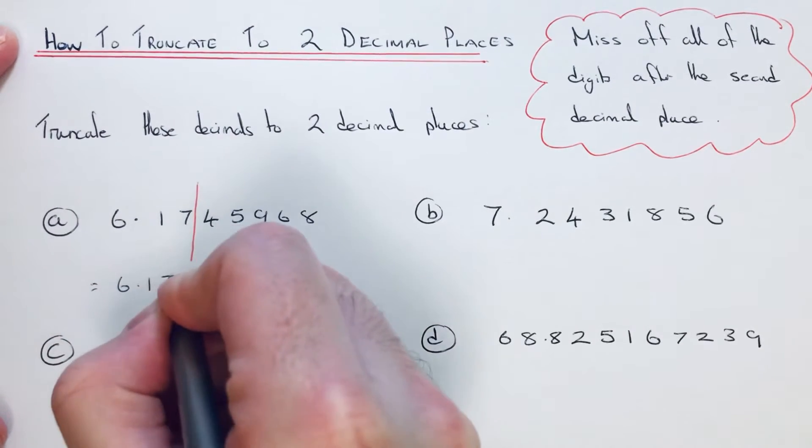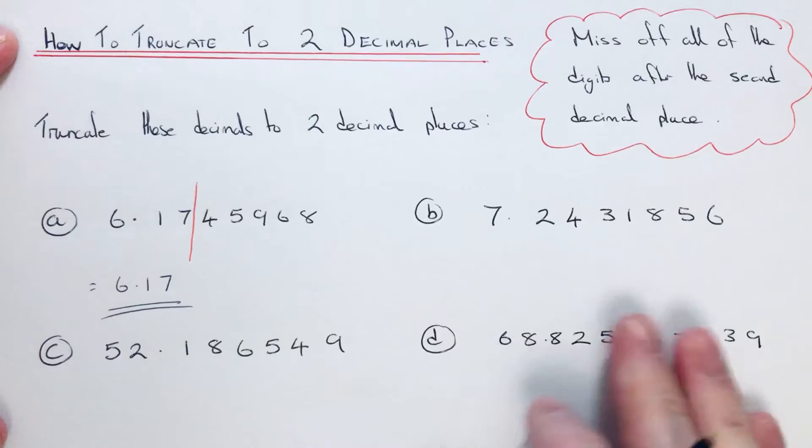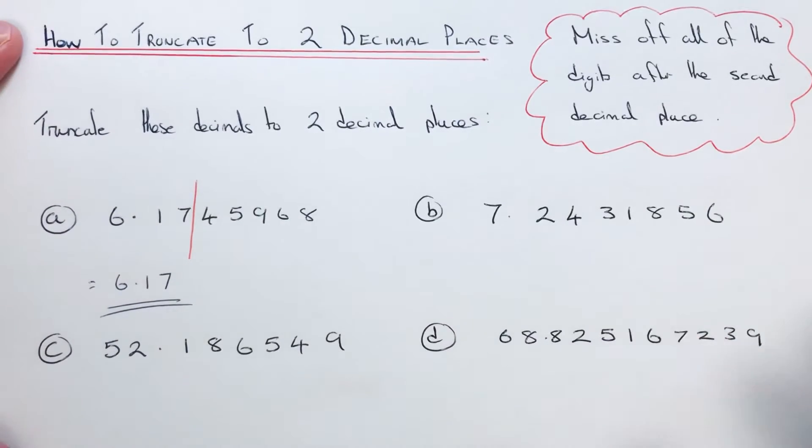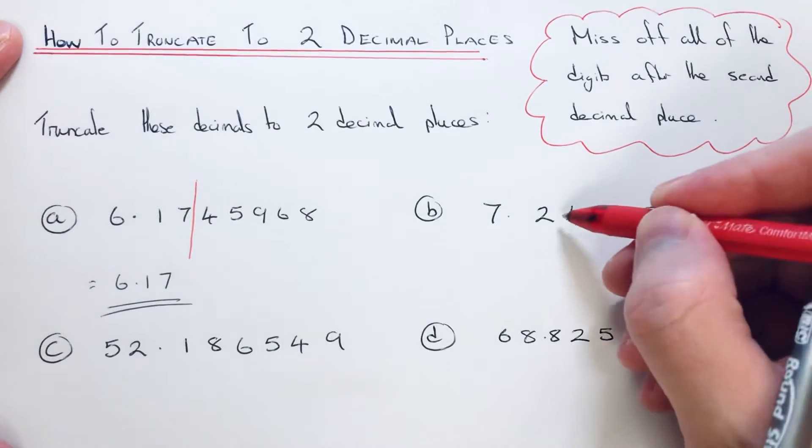So it'd be 6.17. Let's have a look at the second example. Again, we put in a line in two numbers after the decimal point.